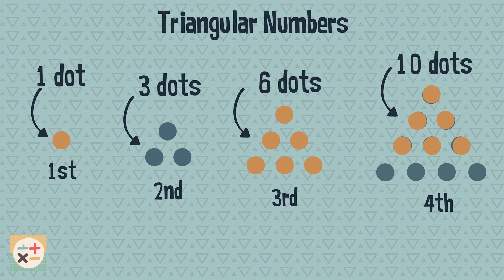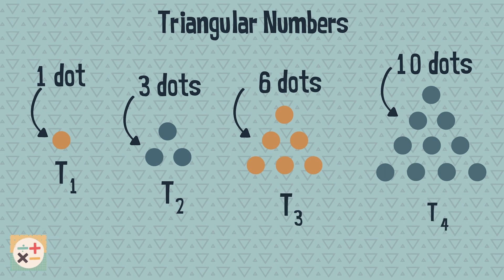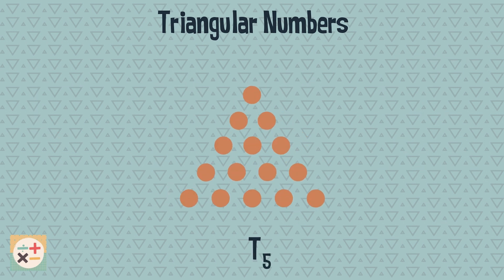When listing the triangular numbers we can write their position number like this. Can you figure out how many dots will make up the fifth triangle? Can you find a pattern for how triangular numbers are calculated?